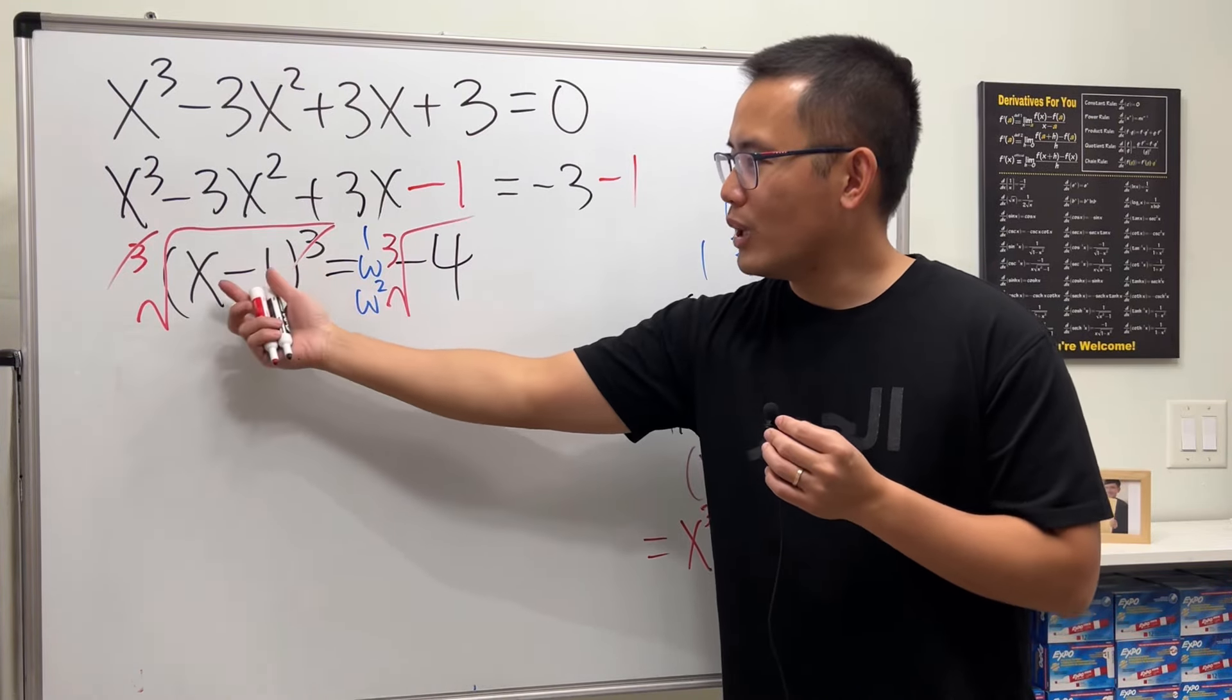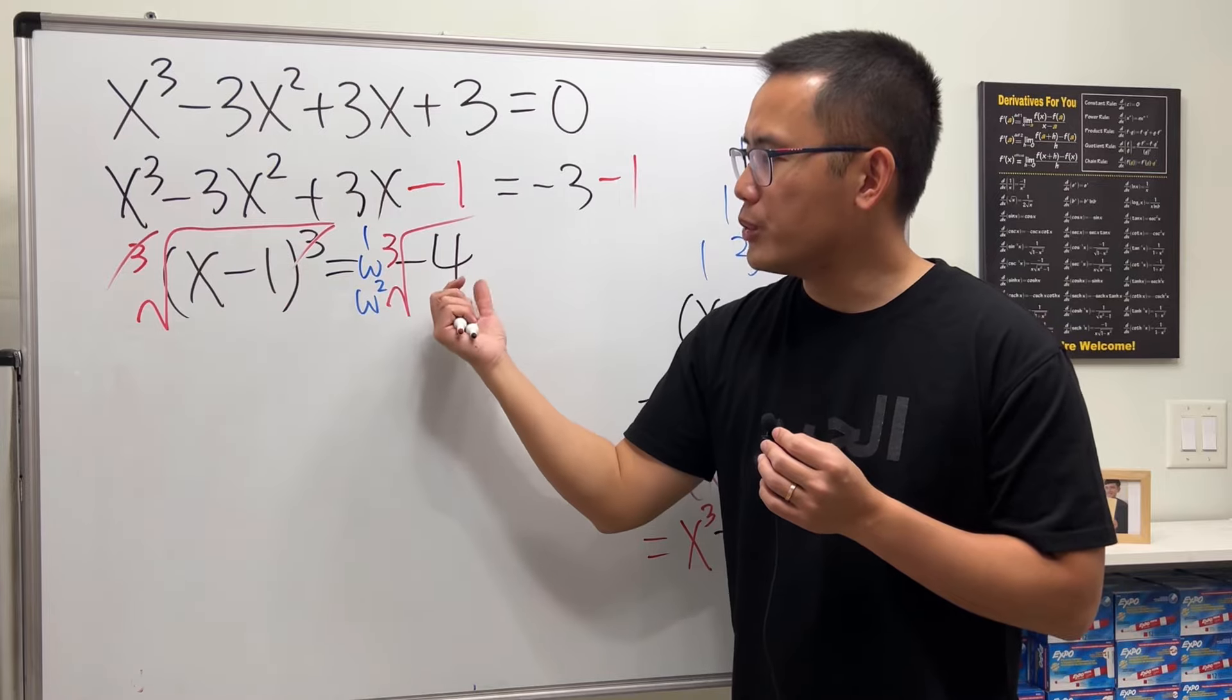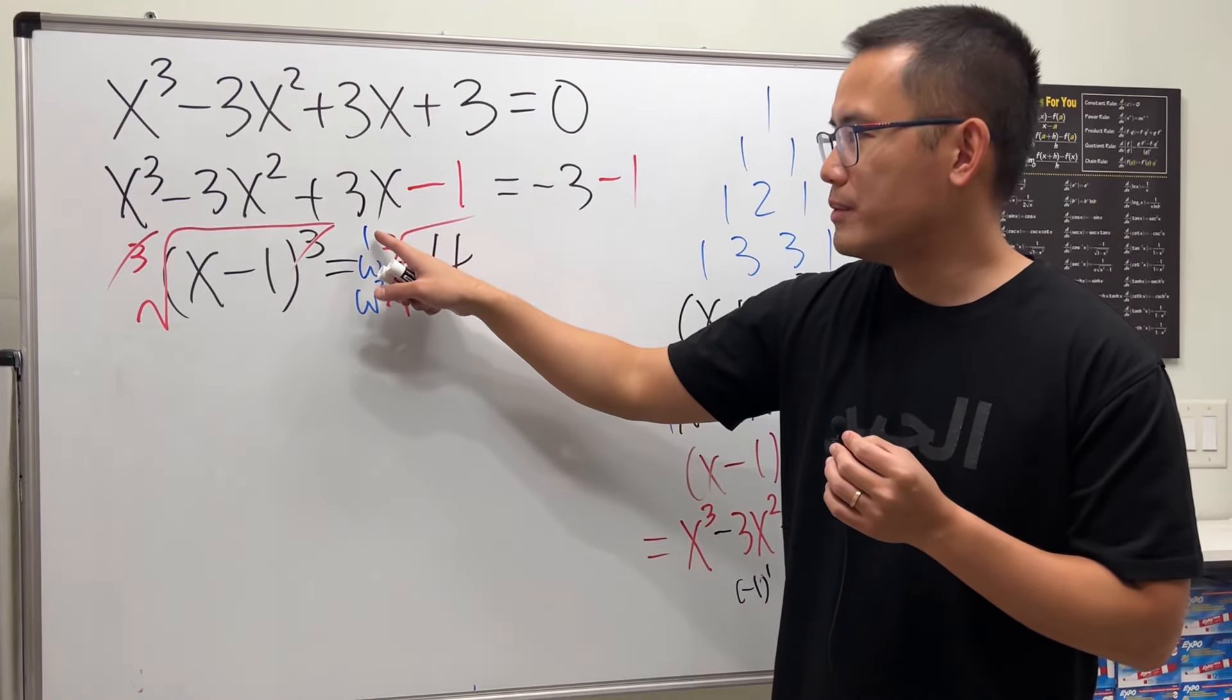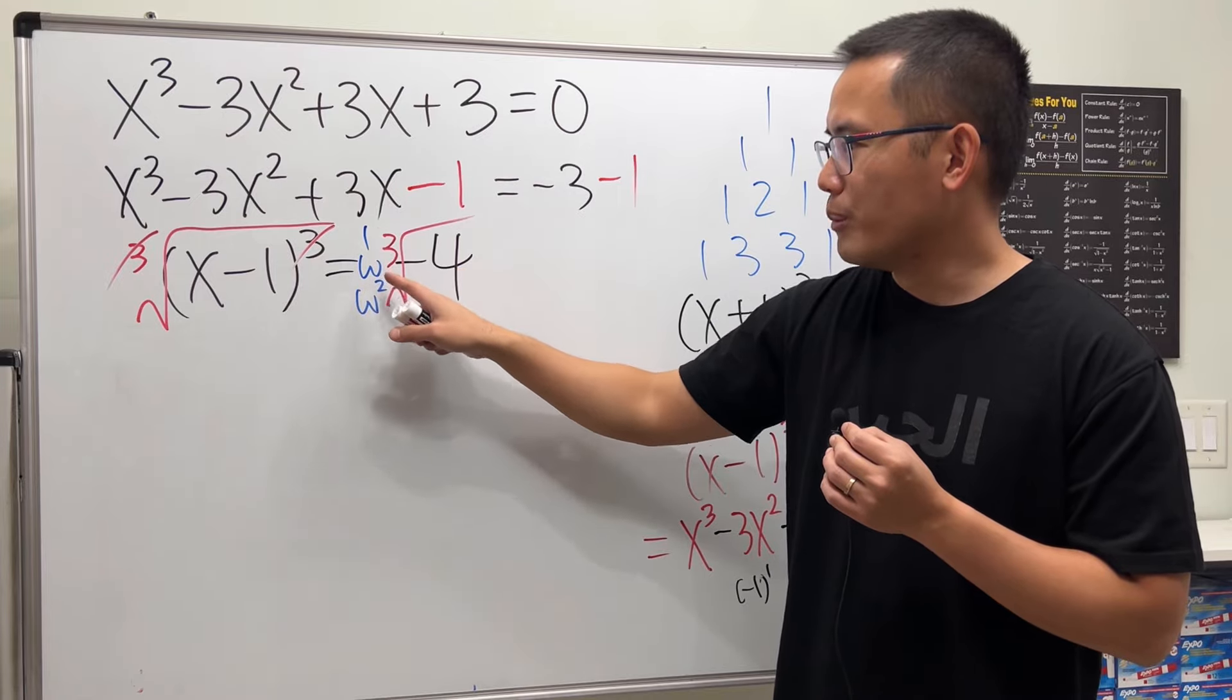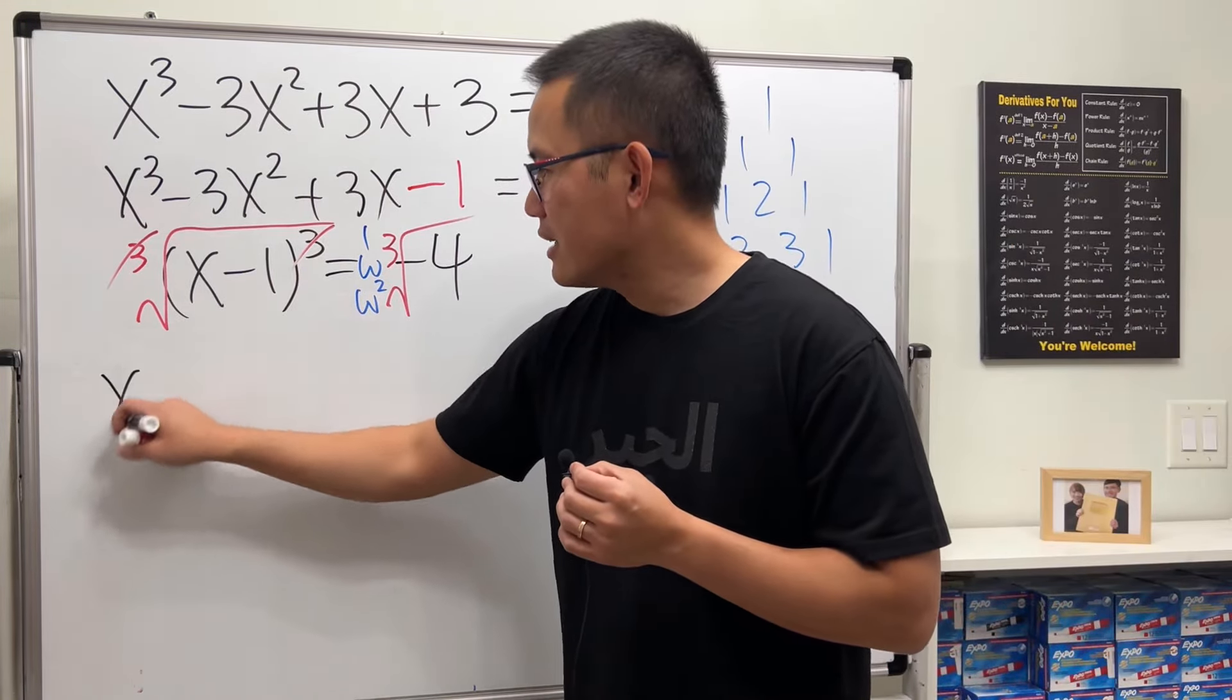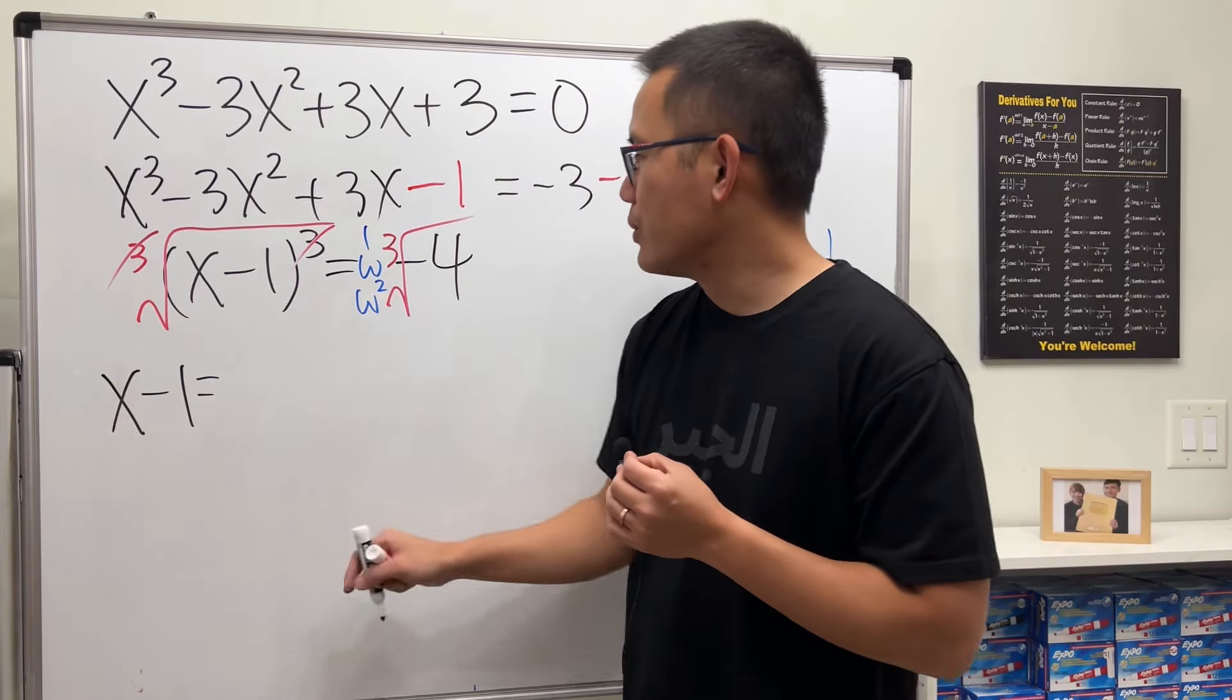If you want to find all the solutions when you have a perfect cube equation, after you take the cube root on both sides, remember to put down 1, ω, and ω².